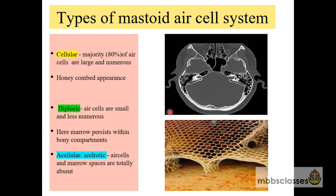In the acellular or sclerotic mastoid, the ear cells and marrow spaces are totally absent and they appear totally whitish on X-ray or CT scan. To give an example of a cellular mastoid, this CT scan shows the mastoid ear cell system — multiple bony partitions in the mastoid region containing air, which is why they appear black on both sides. Its appearance resembles the honeycomb.